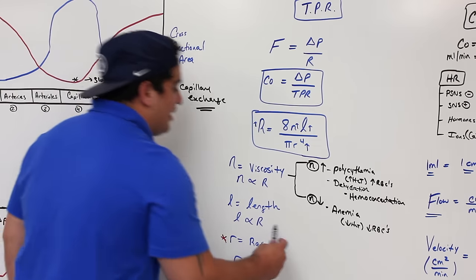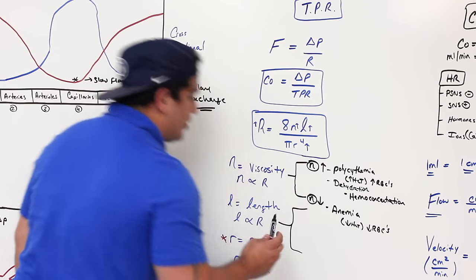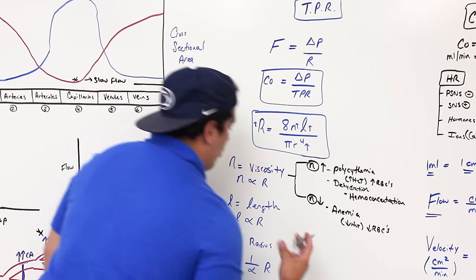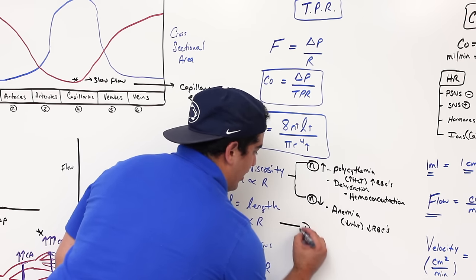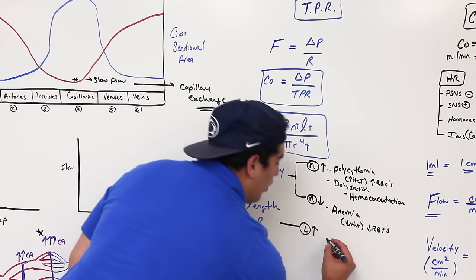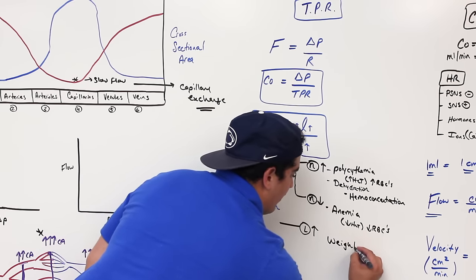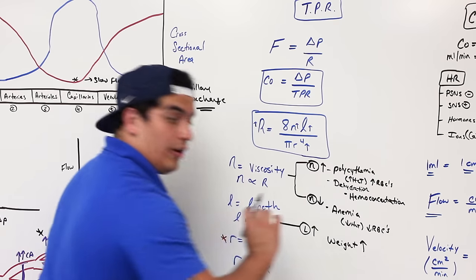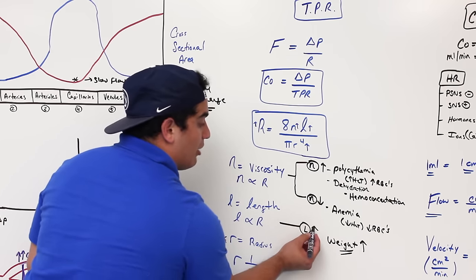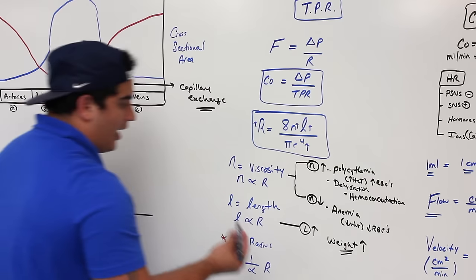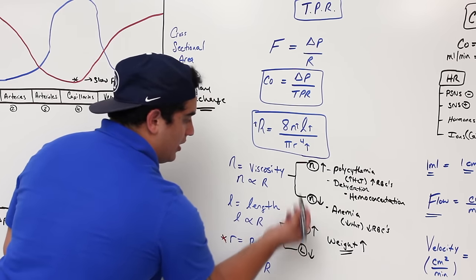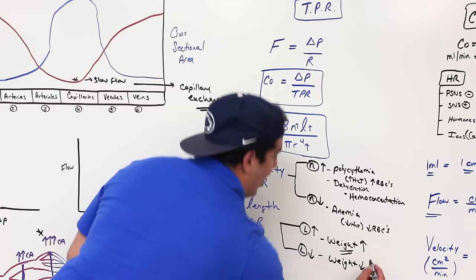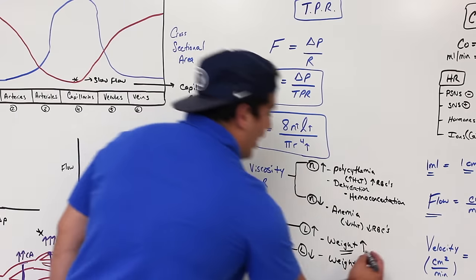Length doesn't change as significantly, but increased body weight means longer blood vessels, which increases resistance. A decrease in body weight decreases vessel length and resistance. The height of the individual also plays a role.